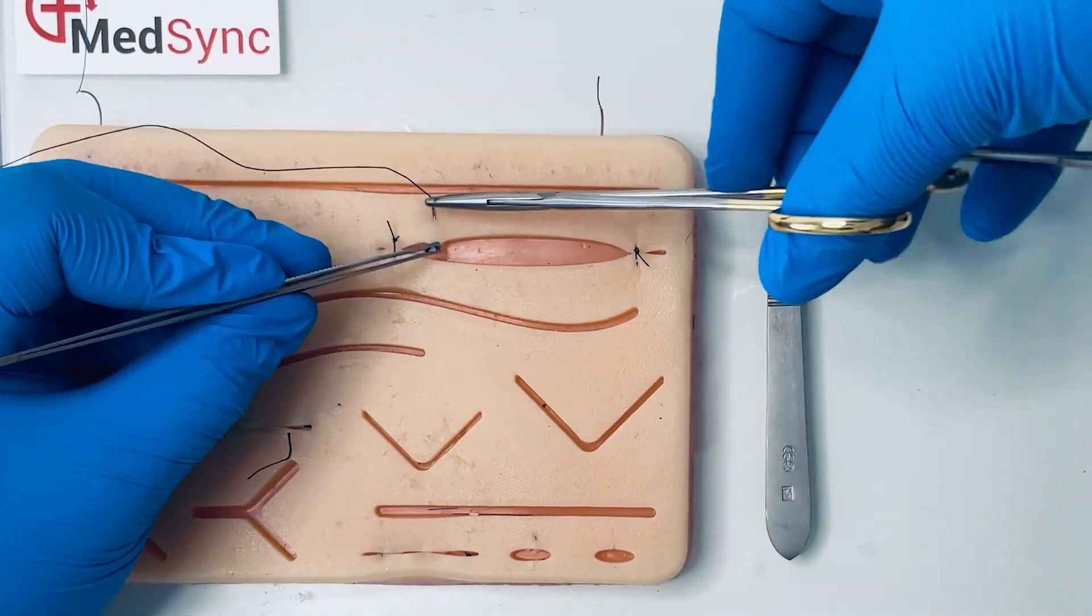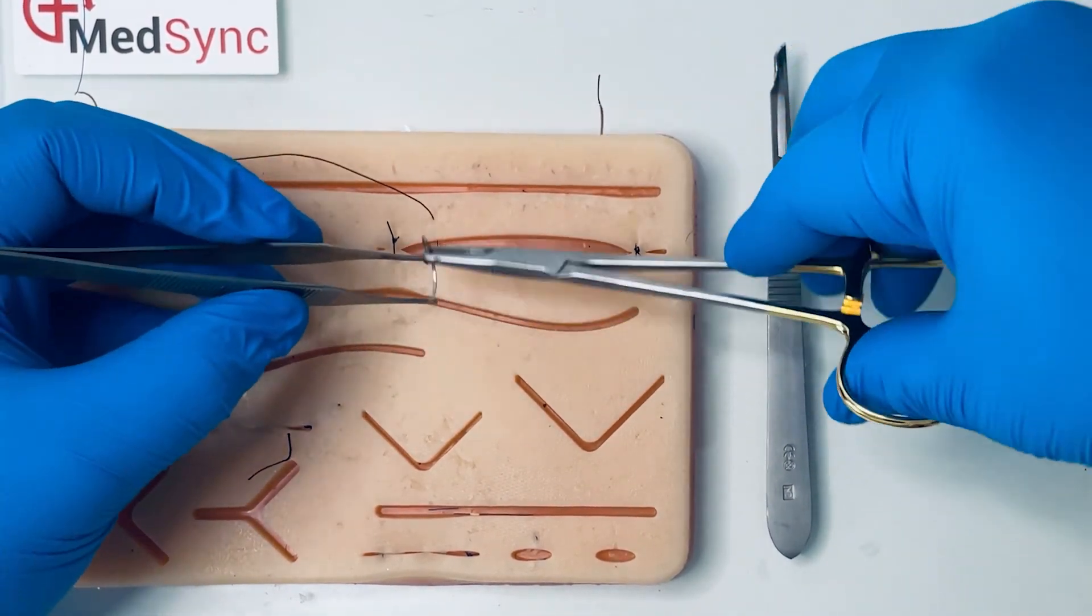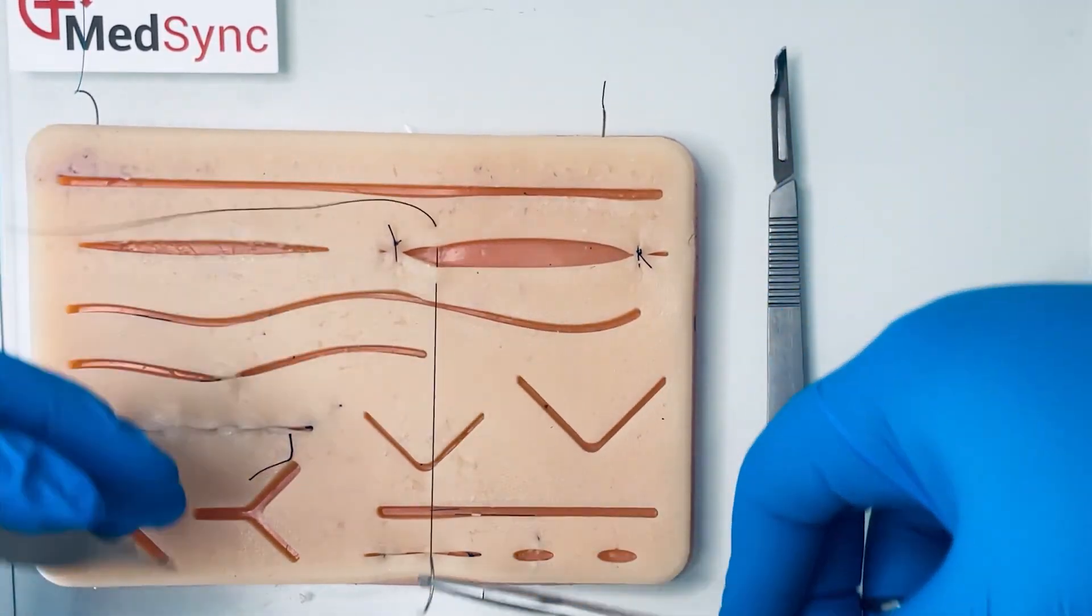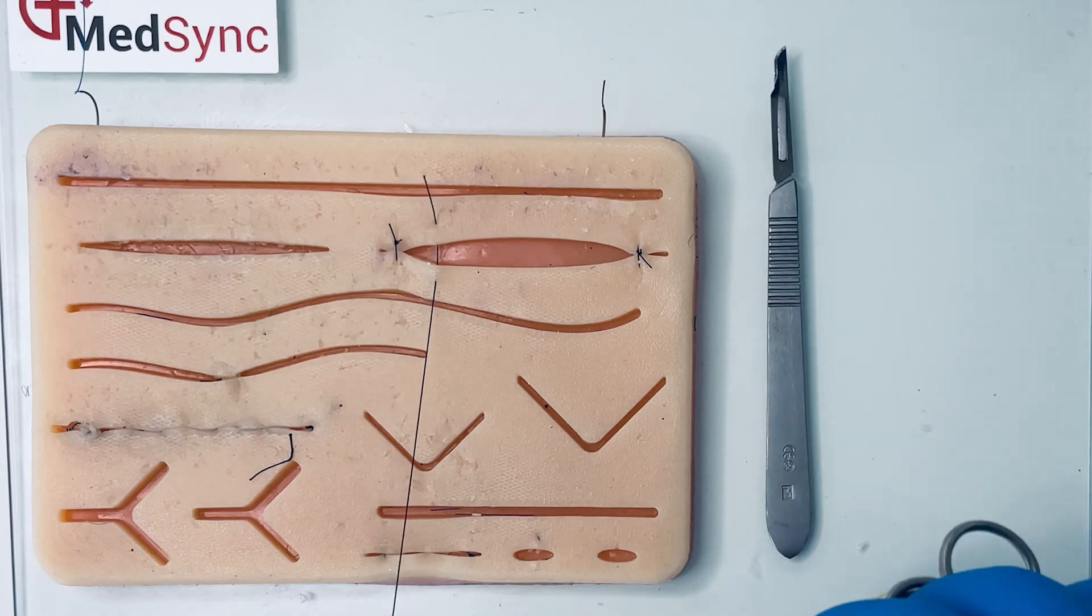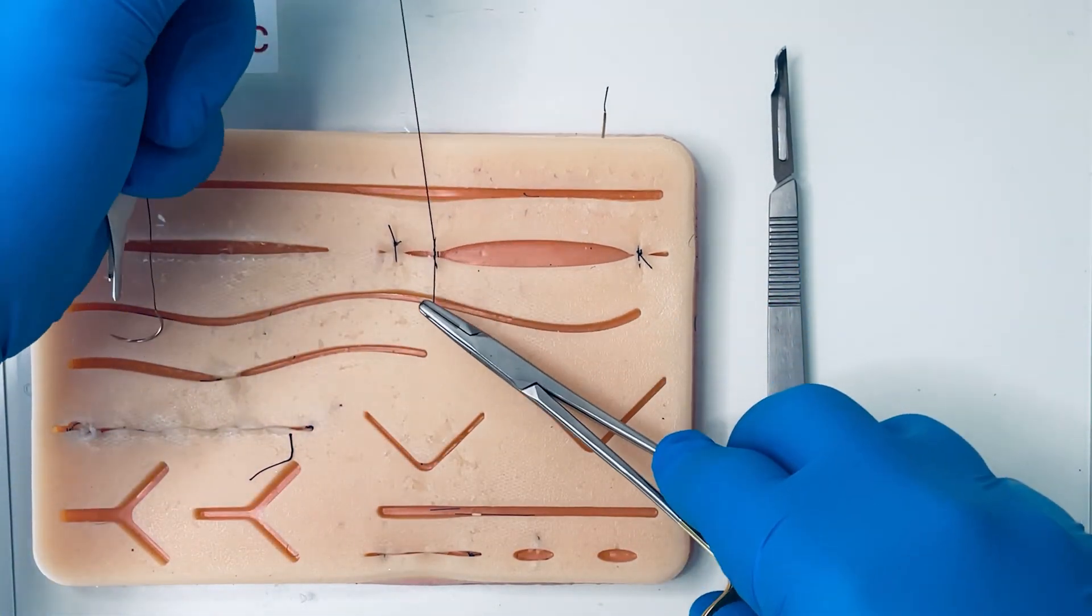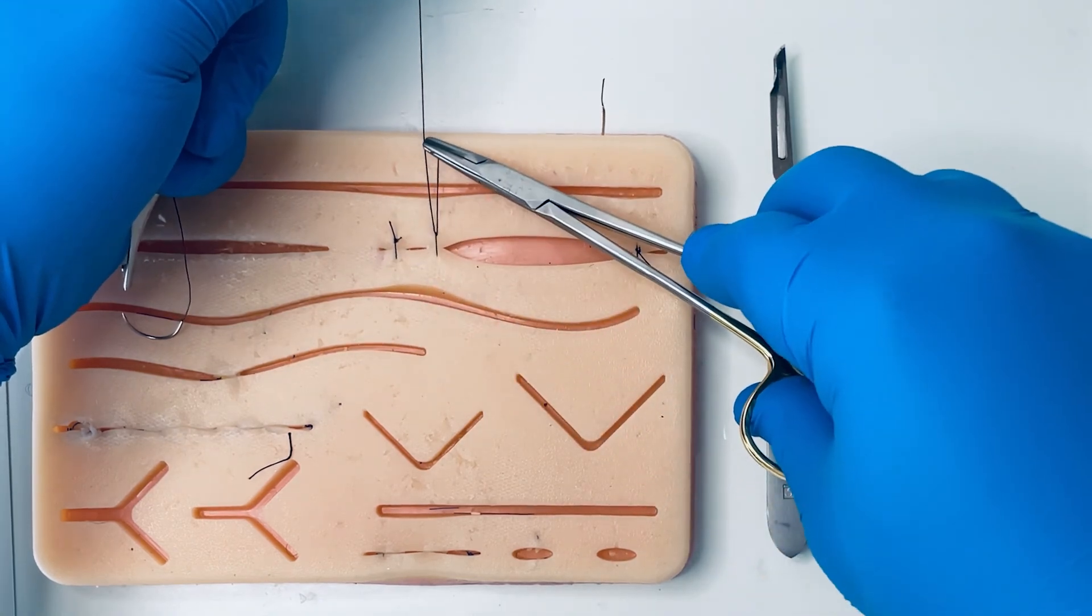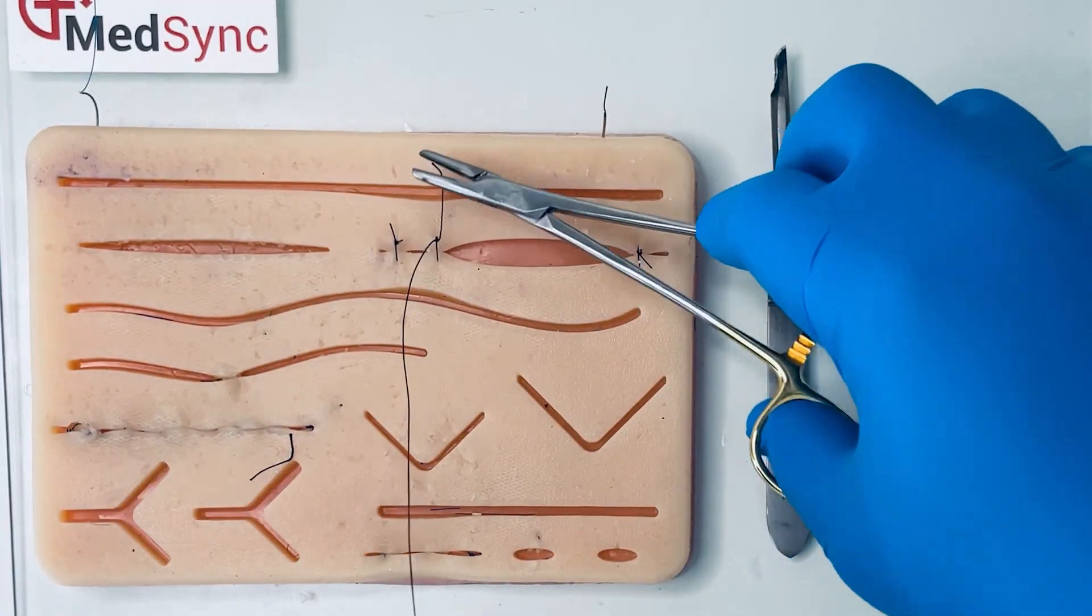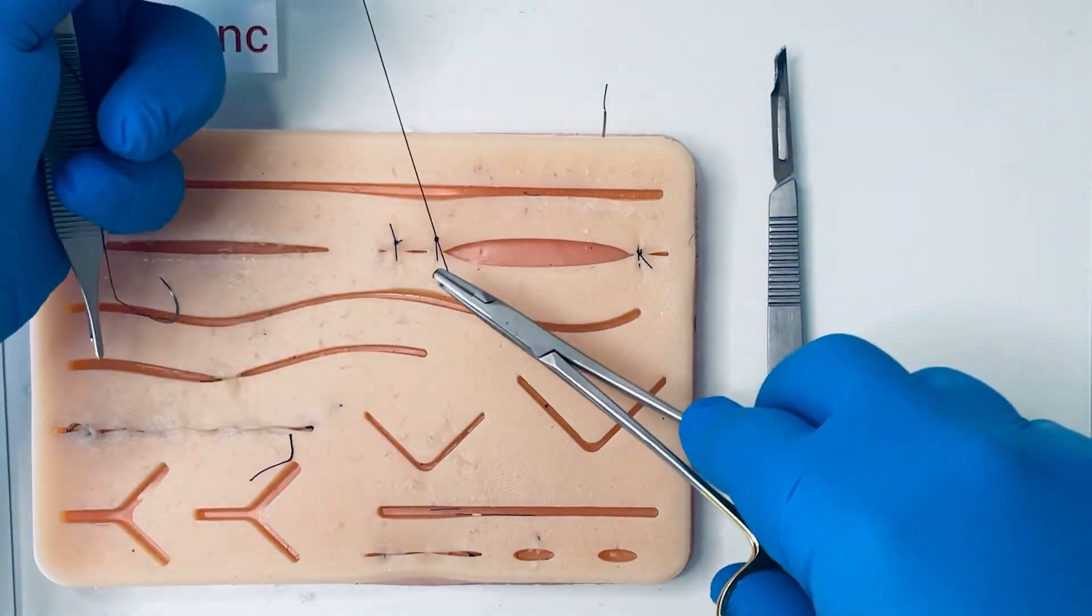In the second technique, after you lay your surgeon's knot to the correct tension, you keep the long thread taut and you slide the short thread over to the same side as the long thread. The knot will hold. You continue laying square knots, alternating your throws.